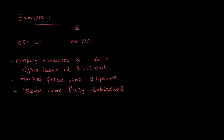That's called a rights issue. Now let's look at how to record it. A company has existing ordinary share capital of $100,000; the par value is $1 per share. The company announces a one-for-four rights issue, meaning if an existing shareholder has four shares, they have the right to buy one new share at $1.25. The market price on that date was $2.00, so $1.25 is a discount compared to the market price.